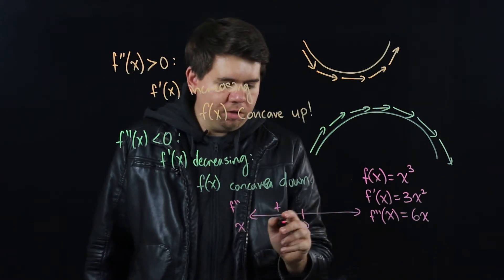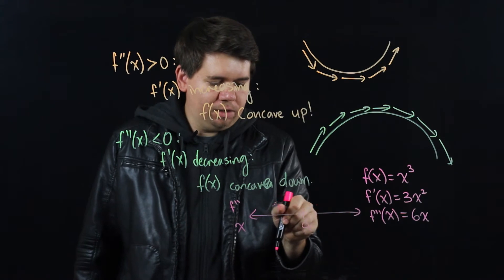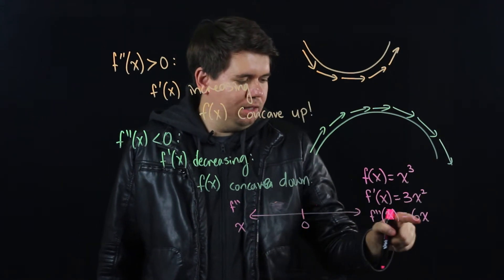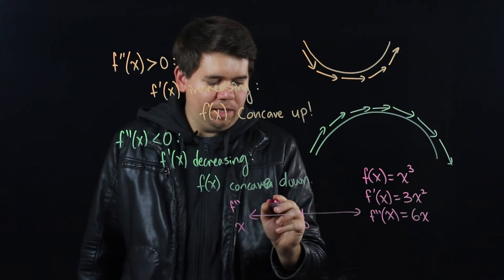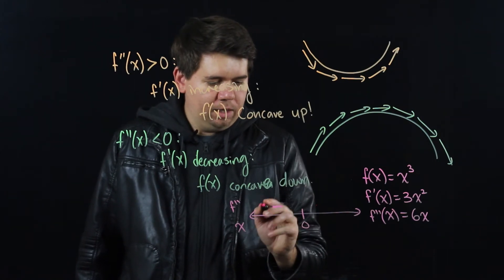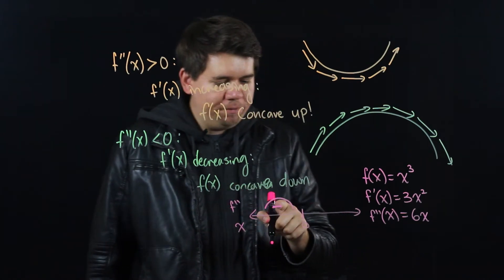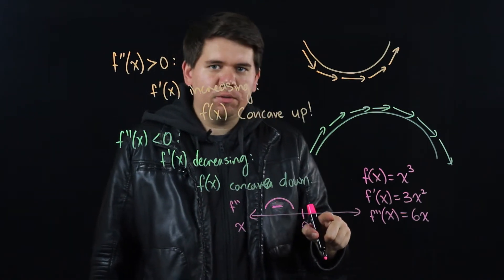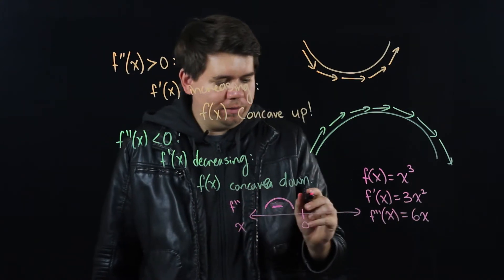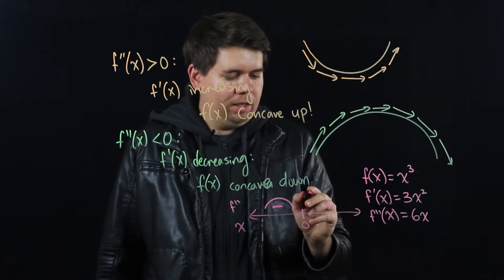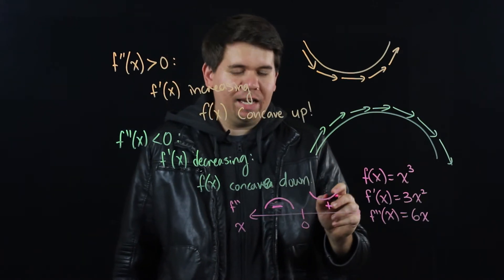If you pick an x smaller than zero, like negative two or something, and plug that in, 6x will come out to be a negative number. So your function should be bending down — concave down. And if you pick a value bigger than zero, like two or three, and plug it in, your second derivative comes out to be positive. So your function should be bending up — concave up.